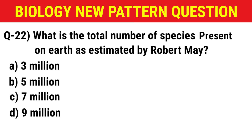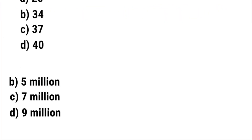Next question: What is the total number of species present on Earth as estimated by Robert May? (A) 3 million, (B) 5 million, (C) 7 million, (D) 9 million. The correct answer is option C: 7 million.